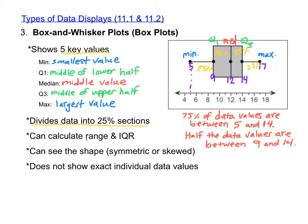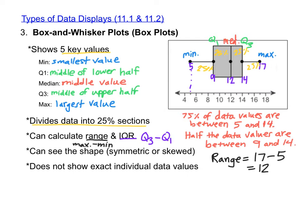Box plots also allow us to calculate the range. The range is just the maximum value minus the minimum value, and with a box plot, you can find the max and the min by looking at the whiskers. For this box and whisker plot, the range would be equal to the maximum value of 17 minus the minimum value of 5, and 17 minus 5 is equal to 12. We can also calculate the interquartile range. The interquartile range is the range of the middle 50% of the data — you find it by taking the difference between Q3 and Q1. So for this particular graph, our interquartile range would be equal to Q3 (which is 14) minus Q1 (which is 9), and 14 minus 9 is equal to 5.